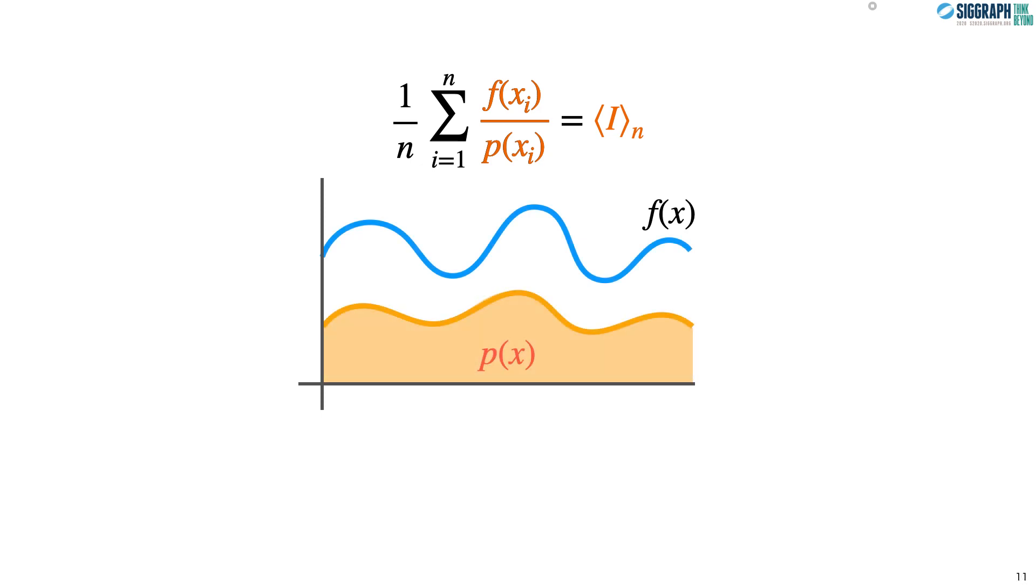However, improving estimates by just taking more samples can be expensive. We can instead improve how the samples are distributed, called a sampling technique. Ideally, we'd want a distribution of samples that is proportional to the function we are integrating, such that higher regions are sampled more often and lower regions are sampled less often. This is called importance sampling.